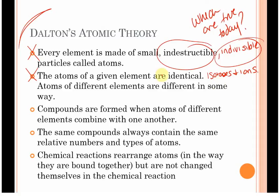Now, atoms of different elements are going to be different in some way. We could say that that part is true. Compounds are formed when atoms of different elements combine with each other. True or false? That sounds good. I mean, we were just talking about water or carbon dioxide. Two elements bonded together gives us a compound. The same compound always contains the same relative numbers and types of atoms. True or false? I hope so, right? Water should always be H2O.